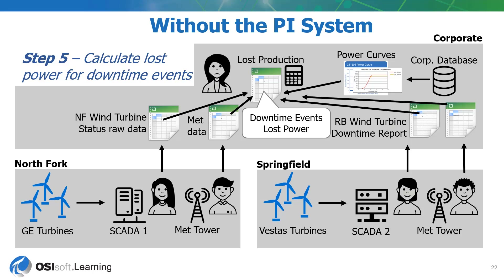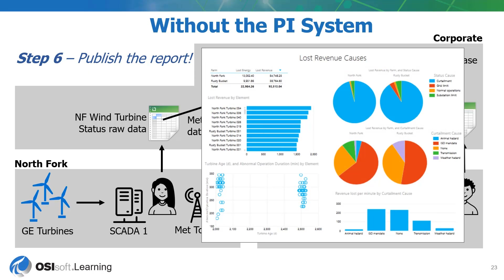Once I've done all the data crunching, I can now create my report. I had to talk to my different contacts at each site as well as each meteorological tower. I had to get all the data in one place and convert it into the same format. Once I've published the report, I send it along to the executive team — and my manager is so impressed, they ask me to start over and do the same thing next week. This is a very difficult way to maintain your systems and be able to execute on looking at your entire operations holistically.